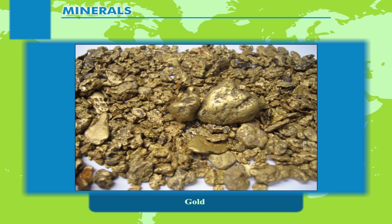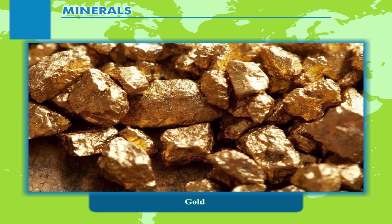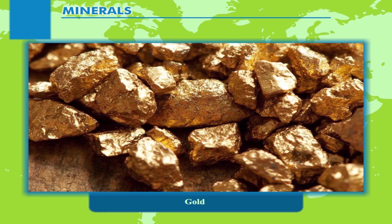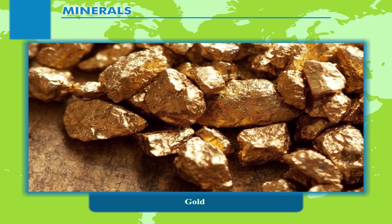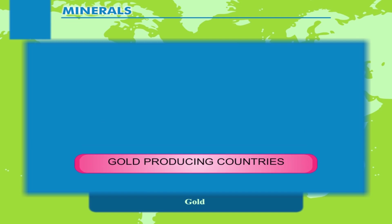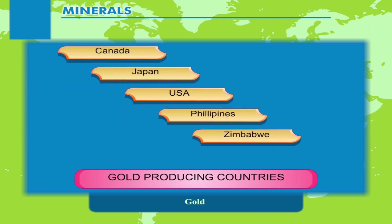Gold is a precious metal used for making ornaments and other items of luxury. Gold has always been valued as it is also a medium of foreign trade. Today, the international monetary system is backed by gold. The largest producer of gold is South Africa. Canada, Japan, USA, Philippines, Zimbabwe, and Ghana are the other producers of gold.